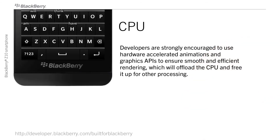HTML5 developers are strongly encouraged to use hardware-accelerated animations to provide smooth transitions that rely on the GPU versus the CPU for graphical operations. Similarly, Cascades and native developers are encouraged to rely on hardware-accelerated multimedia and graphics APIs. Where possible, they should leverage built-in Cascades animations to ensure smooth and efficient rendering.